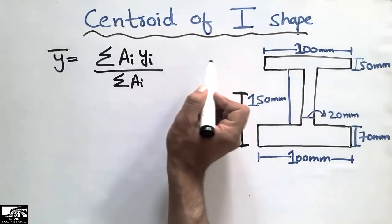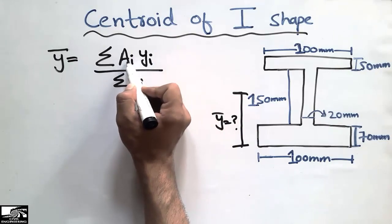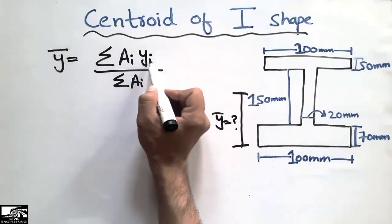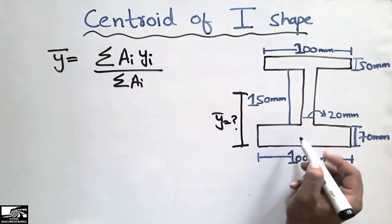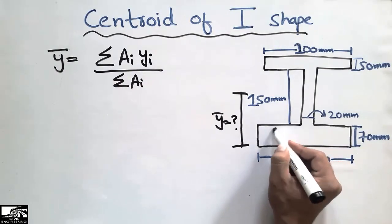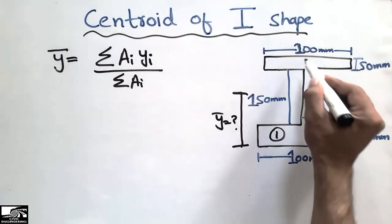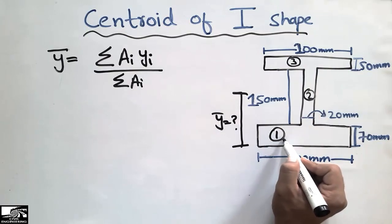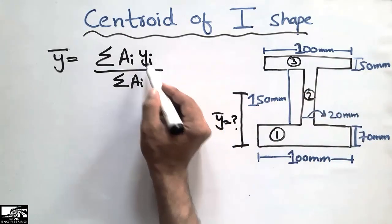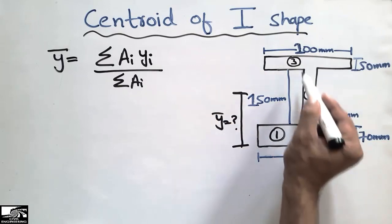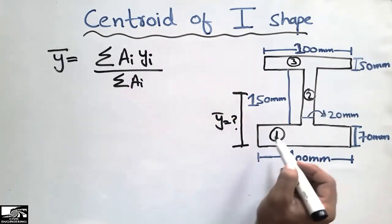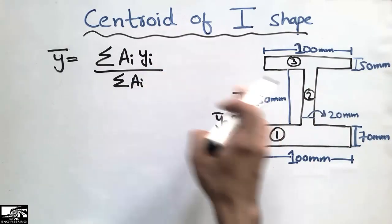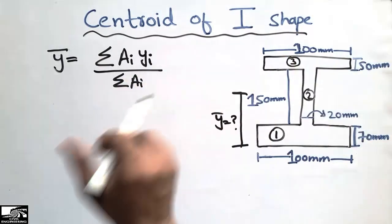The Aᵢ shows the area of the individual object and ȳᵢ shows the centroid of the individual object. Consider this as object one, this as the second object, and this as the third object. The areas are represented by A1, A2, A3, and the centroids are y1, y2, y3. Dividing the summation of Aᵢyᵢ by the summation of areas A1+A2+A3 gives us the centroid of this I-shape.